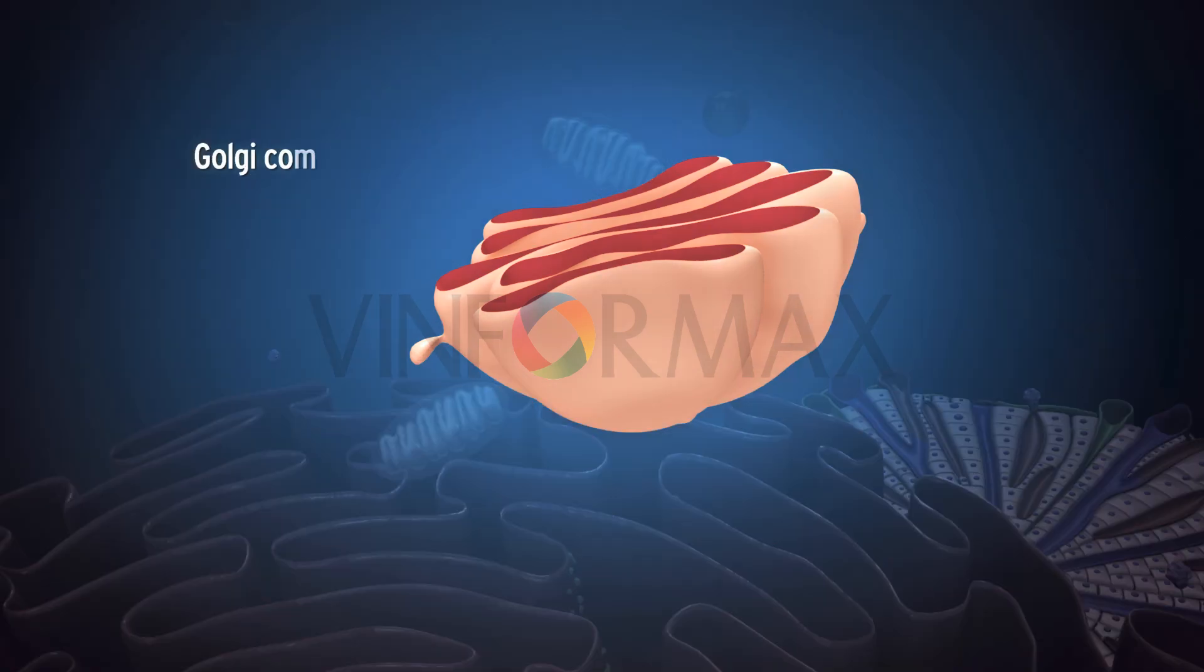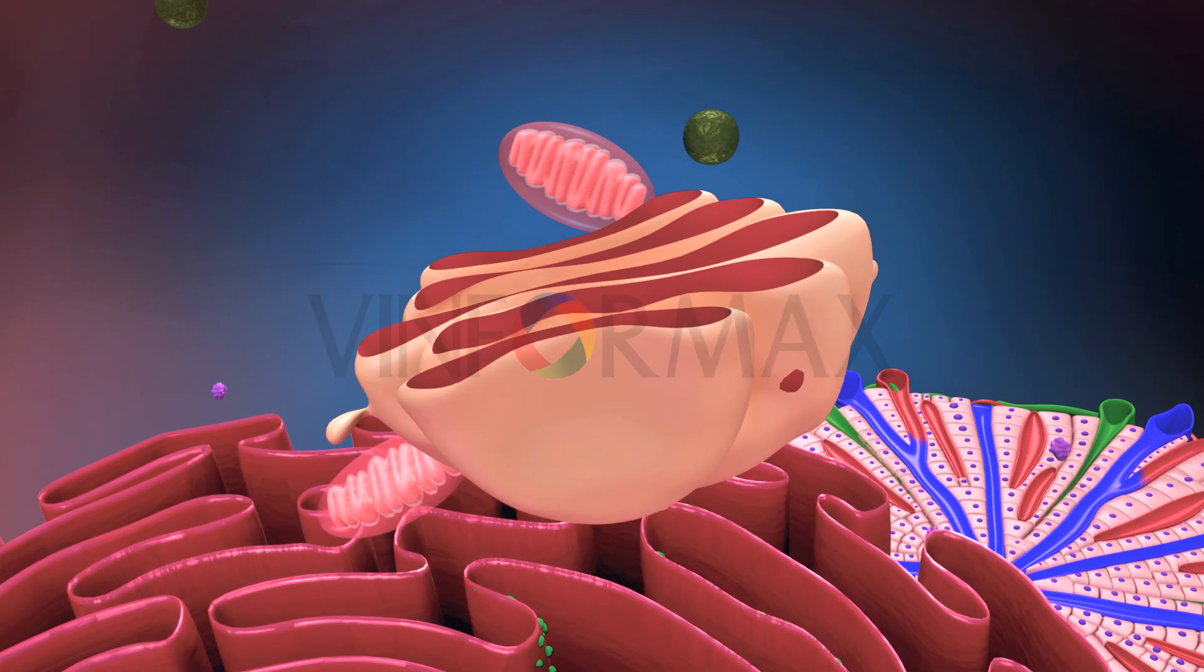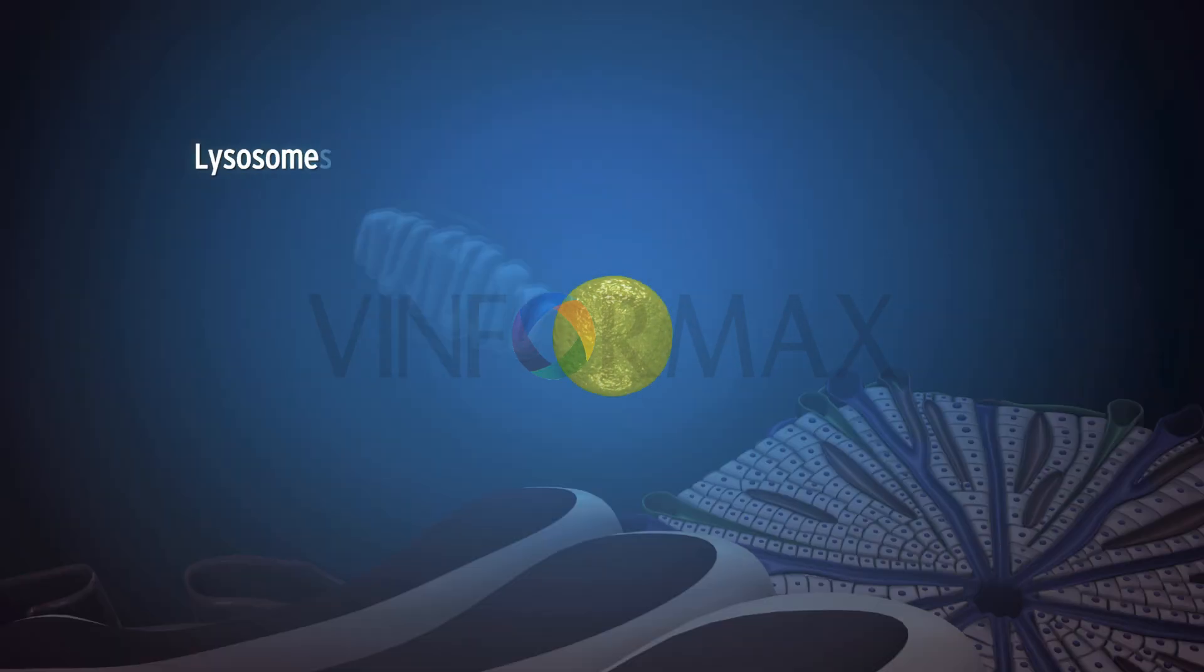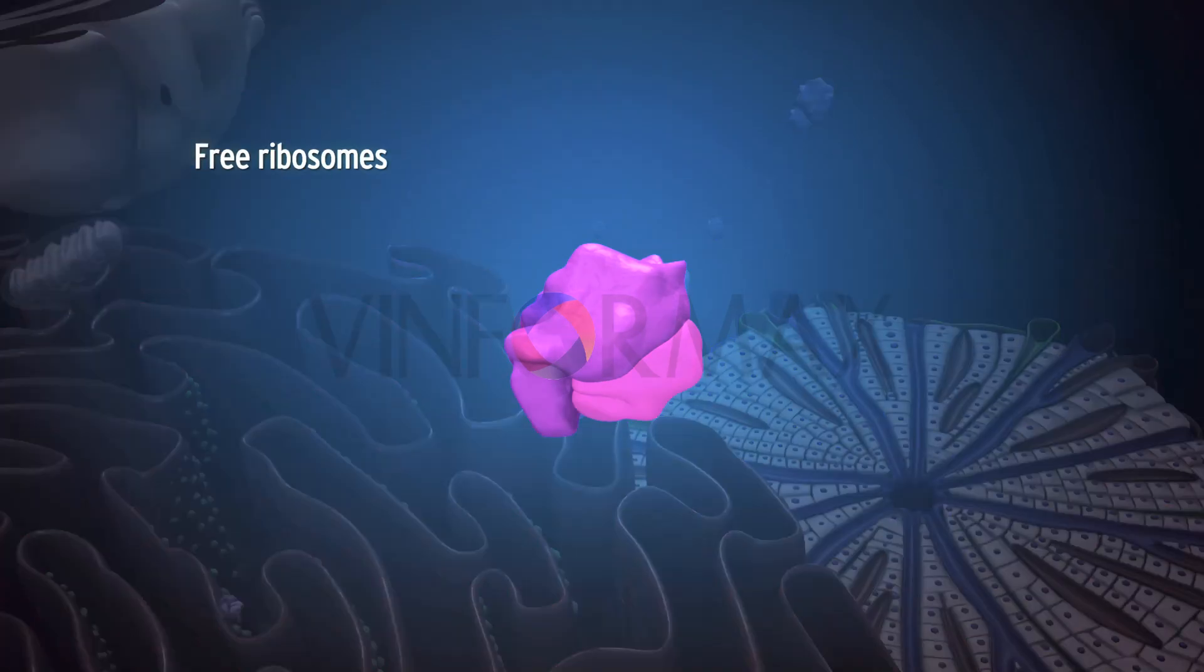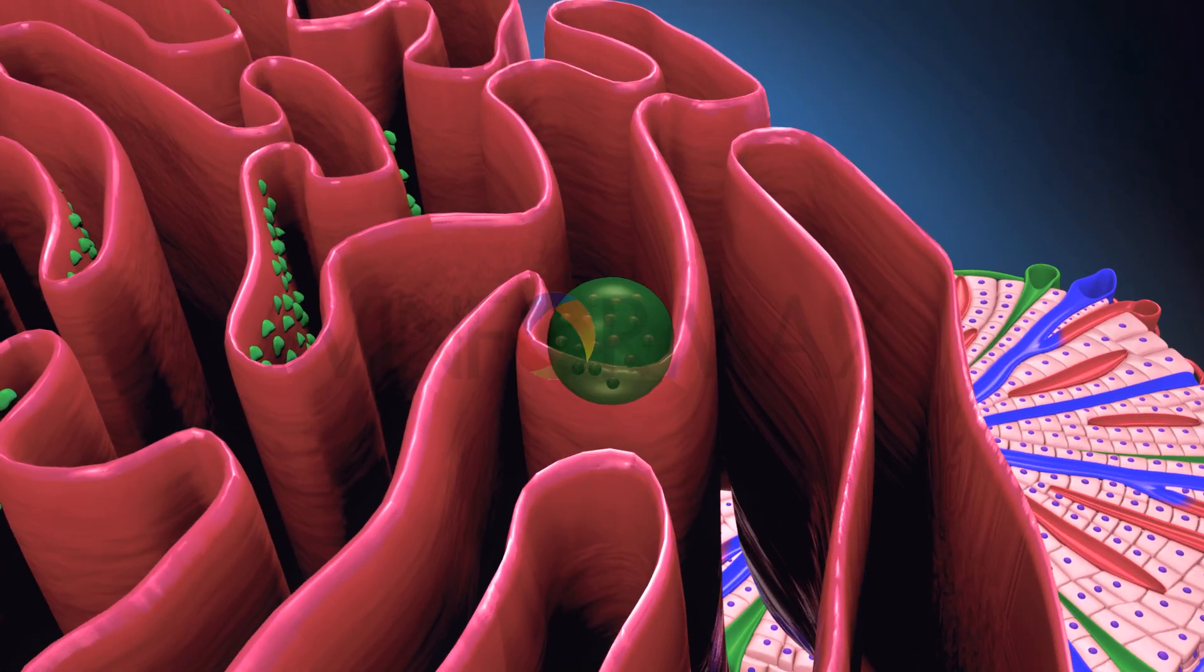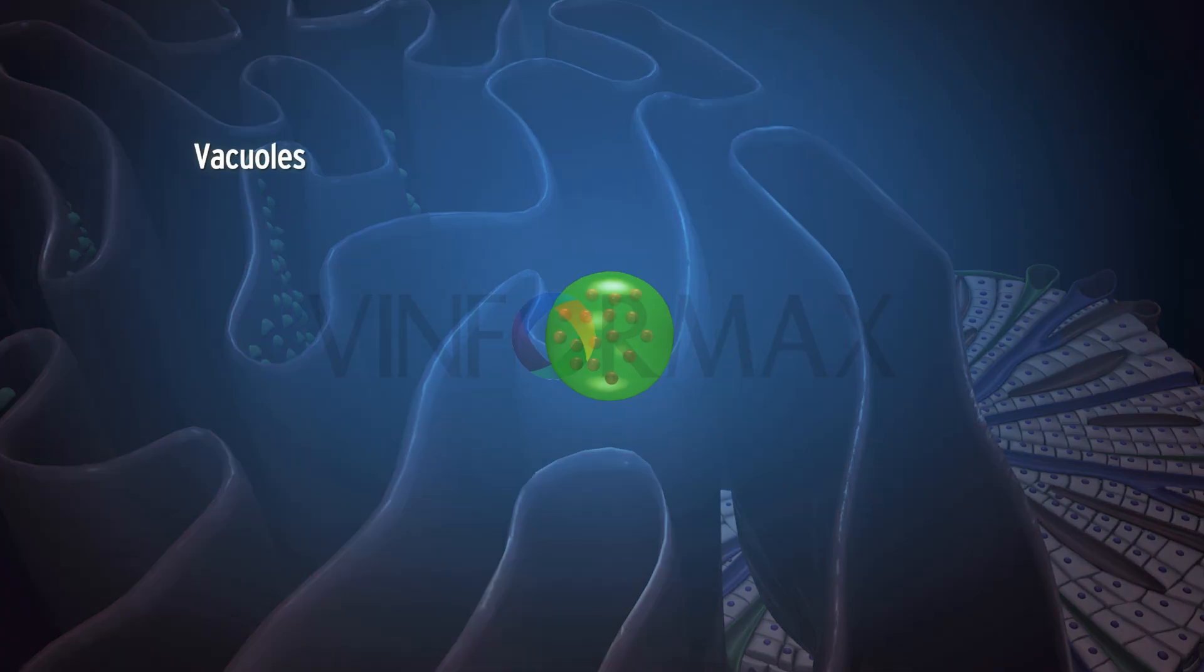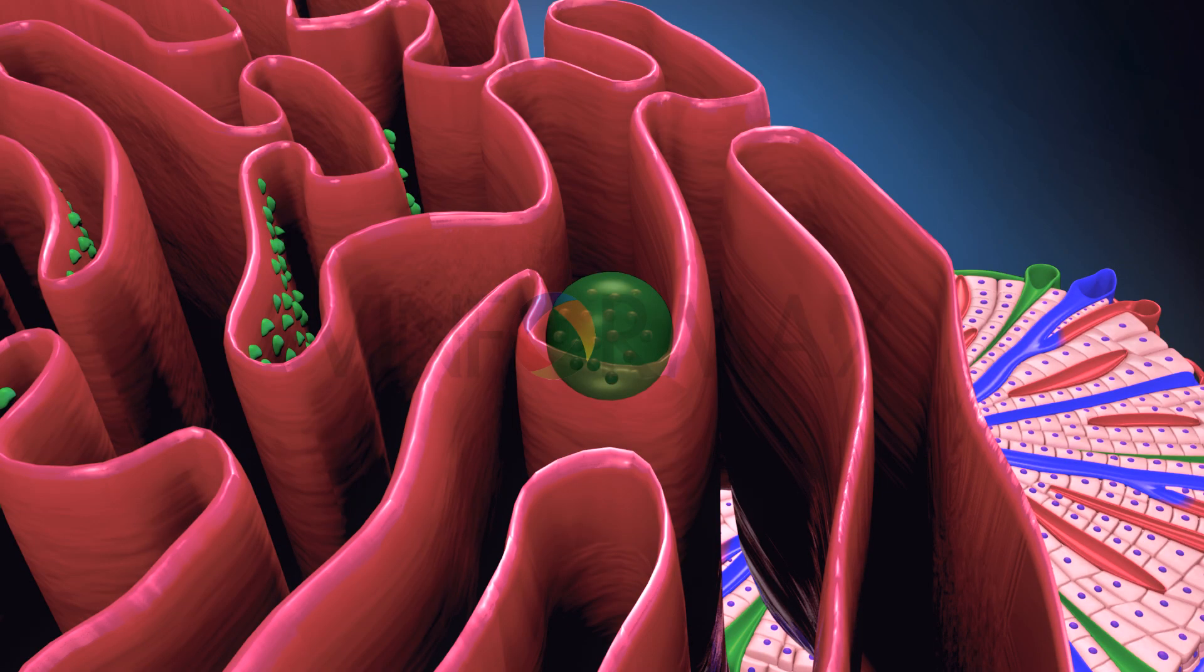The hepatocytes also contain Golgi complex, lysosomes, free ribosomes, and vacuoles containing enzymes. The liver cells also contain stored glycogen, lipid, and iron. Some hepatocytes are binucleated.